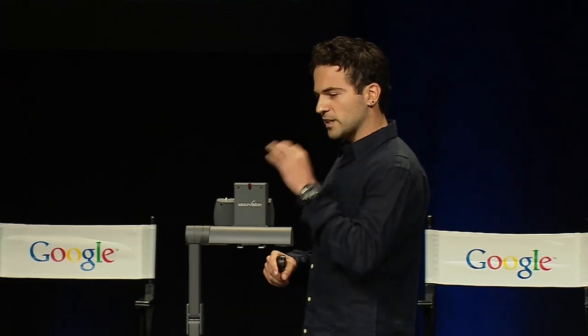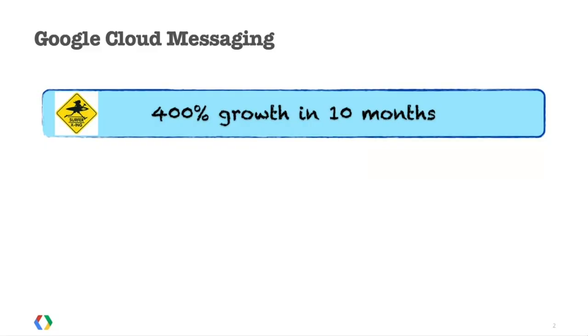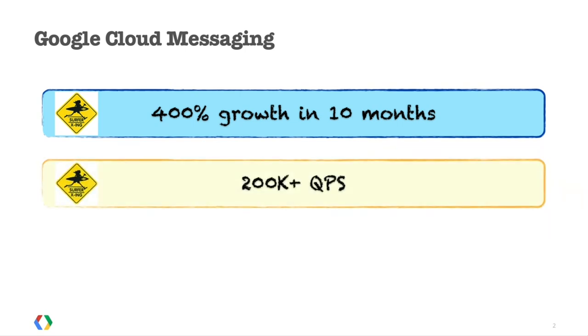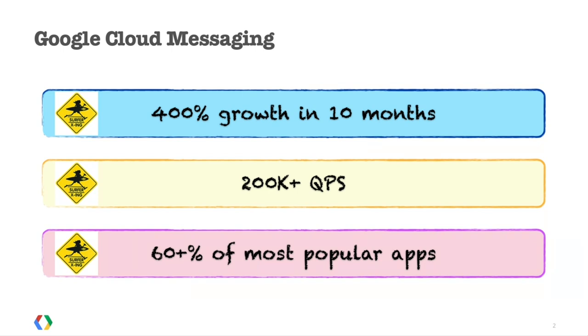I really want to take a moment to thank all of you that today use Google Cloud Messaging in your application, because it helps the ecosystem by reducing the impact on battery life, network signaling, and the amount of data that goes over the wire. It improves user experience by providing fresh, up-to-date data. June 27, 2012 is the day we deprecated C2DM. From that day until now, Google Cloud Messaging experienced an impressive 400% growth, and this growth accelerates every single month. In April, we were already processing over 200,000 queries per second. Over 60% of the most popular, most downloaded applications on the Google Play Store today use GCM.